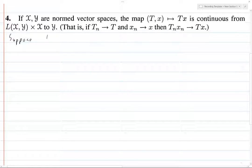So suppose tn goes to t and xn goes to x. Let epsilon be greater than 0. We want to show that the difference between tn xn and tx is less than epsilon by choosing a large enough n.